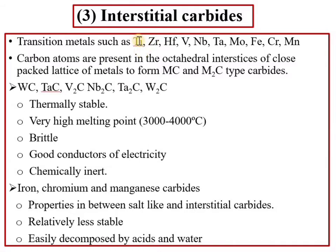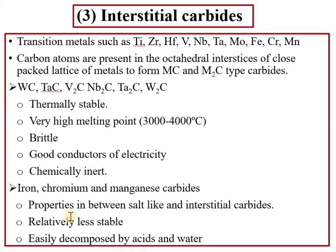Interstitial carbides are thermally stable with very high melting points, have a very brittle nature, are good conductors of electricity, and are chemically inert. However, iron, chromium, and manganese carbides are in-between salt-like and interstitial carbides, and are easily decomposed by acids and water. In interstitial carbides, carbon atoms occupy interstitial positions in the metal lattice.